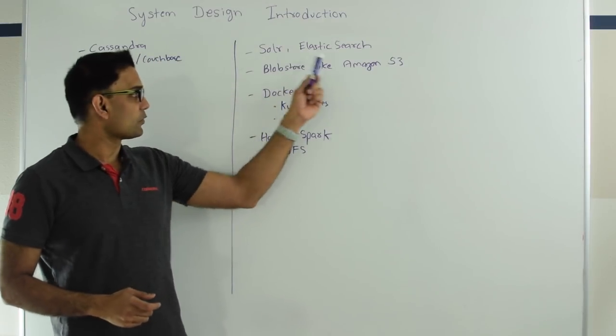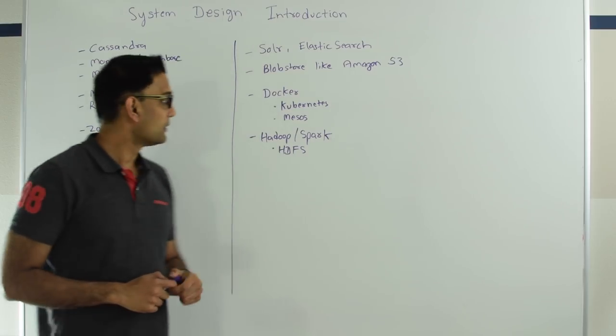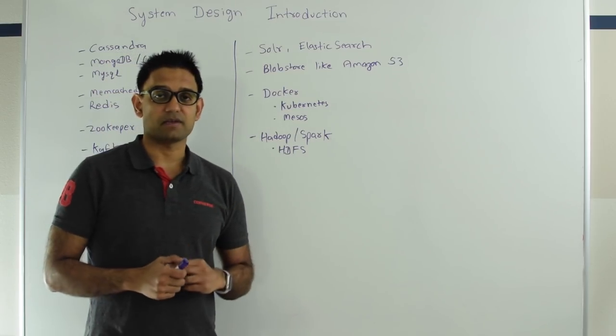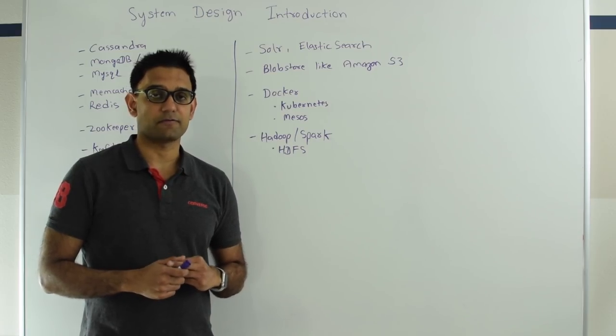Next up is Solr and Elasticsearch. Both of them are search platform on top of Lucene. Both of them are highly available, very scalable and fault tolerant search platform and they do provide things like full text search.